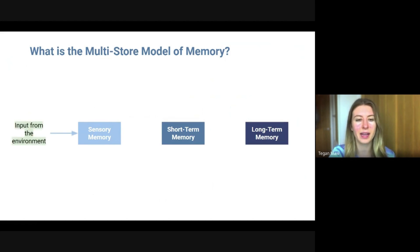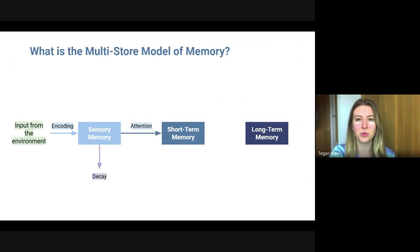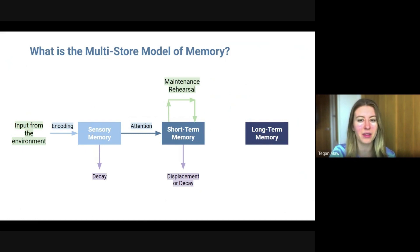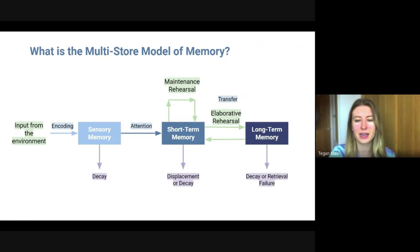Firstly we get input from the environment — a sight, a sound, a taste, etc. This goes into your sensory store and that is called encoding. If we do not pay attention to it, that memory will decay. If we do pay attention to it, that information will be committed into the short-term memory. To remain in short-term memory it has to be rehearsed — this is called maintenance rehearsal. If we do not rehearse it, it can be displaced by other information or it can just decay. Information can be transferred into long-term memory through elaborative rehearsal, and information can also decay or we can fail to retrieve it and thus forget it.